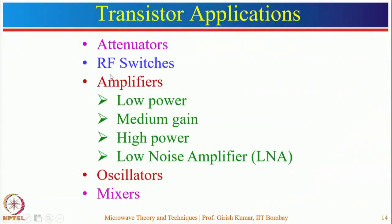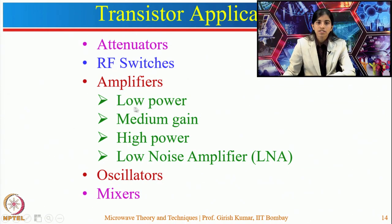Microwave transistors can be used in attenuators, RF circuits, and amplifiers including low power, medium gain, high power, and low noise amplifiers. They are also used in oscillators and mixers. In the previous lecture, transistors were studied in variable attenuators and RF switches; upcoming lectures will cover their use in amplifiers, oscillators, and other circuits.